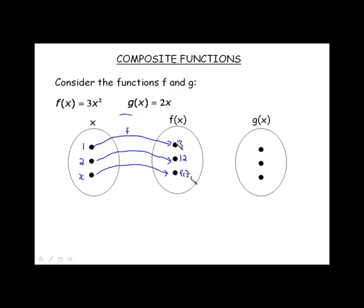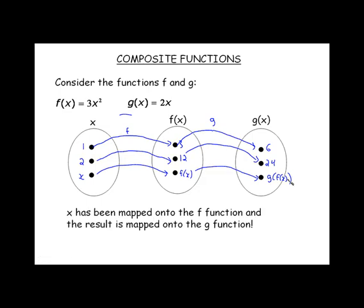Now we're going to go one step further. After mapping the x value into the f function, we take that value and map it onto the g function. We take that value of 3, which was the range of the f function, put it into the g function, and 3 times 2 gives us 6. Then we map 12 into the g function, and 12 times 2 is 24. Finally, in general, when we map the f function into the g function, we get g(f(x)). We're substituting the f function into the g function.